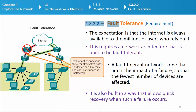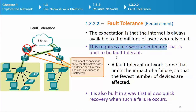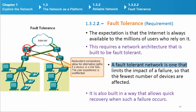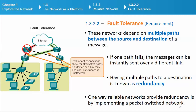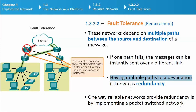Fault tolerance: The expectation is that the Internet is always available to the millions of users who rely on it. This requires a network architecture that is built to be fault tolerant. A fault tolerant network limits the impact of a failure so that the fewest number of devices are affected, and is built in a way that allows quick recovery. These networks depend on multiple paths between the source and destination of a message — having multiple paths to a destination is known as redundancy.